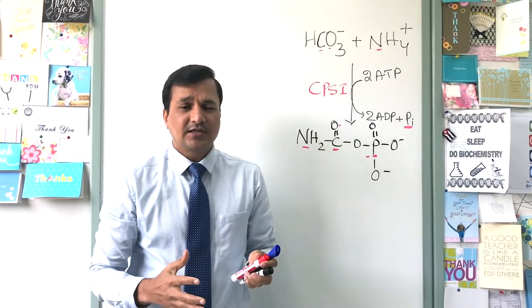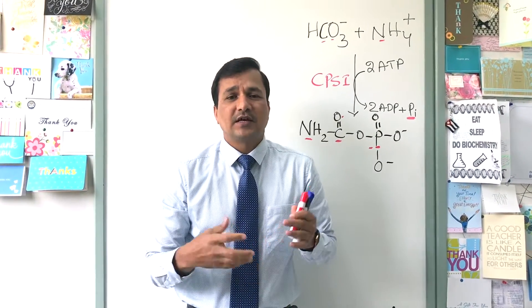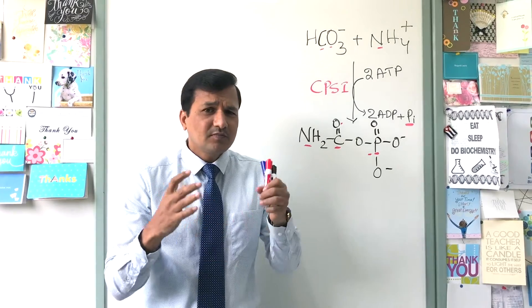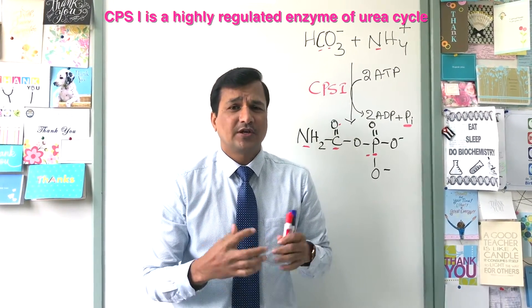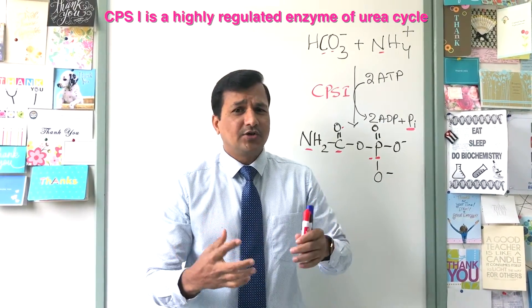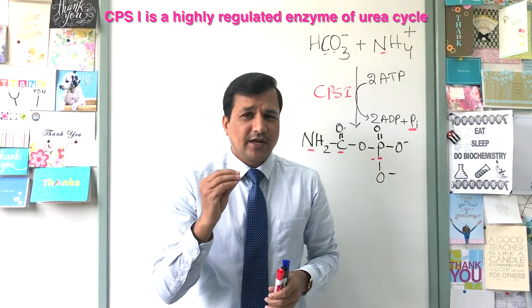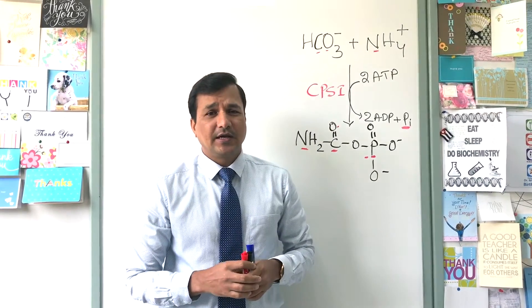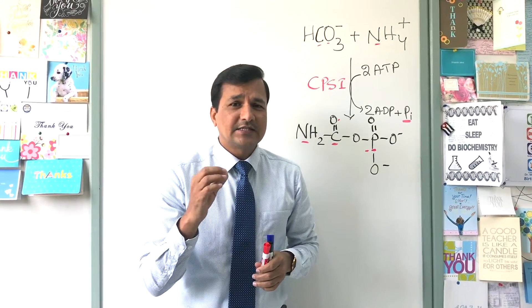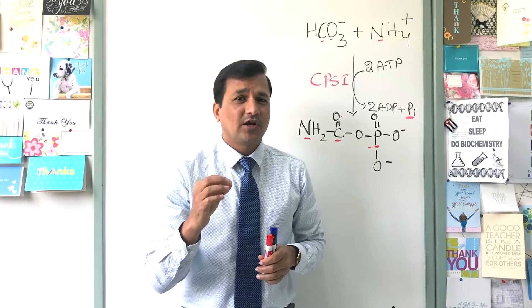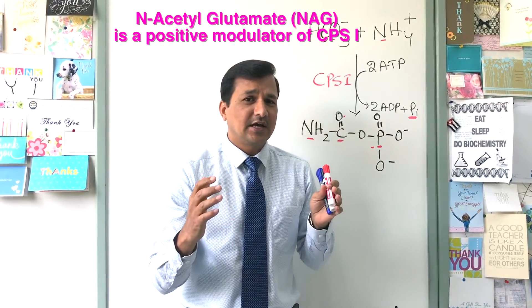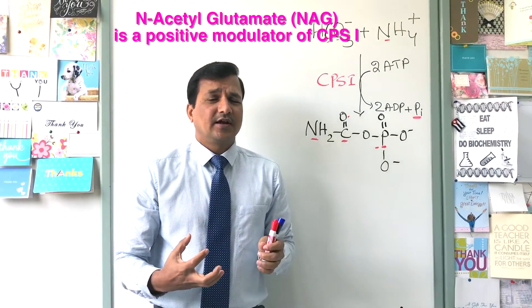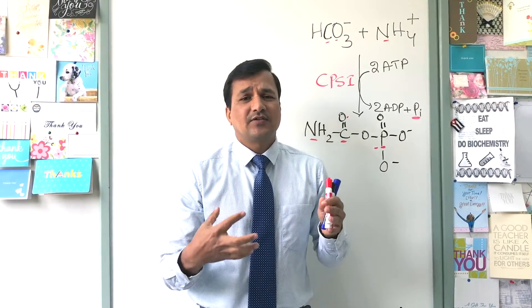The carbamyl phosphate synthetase one reaction is referred to as the rate-limiting and regulated step in the urea cycle — it is the most regulated step. The regulation of urea cycle at CPS1 is done by a molecule called N-acetyl glutamate, which we call NAG, and this represents allosteric regulation.